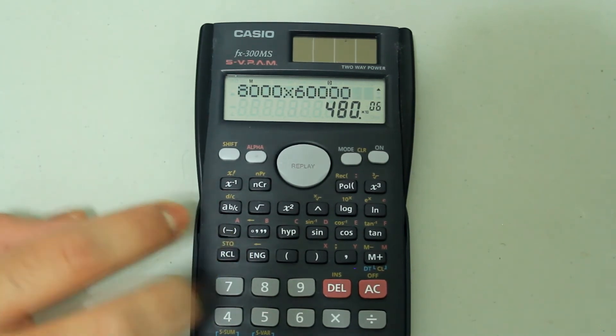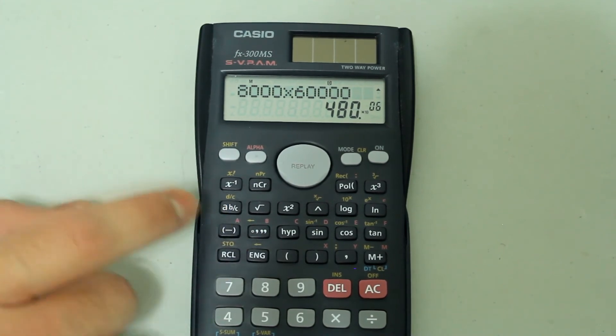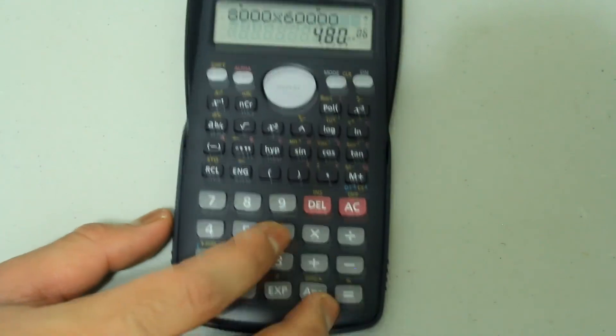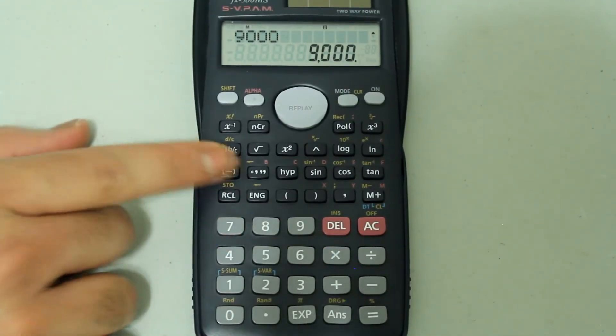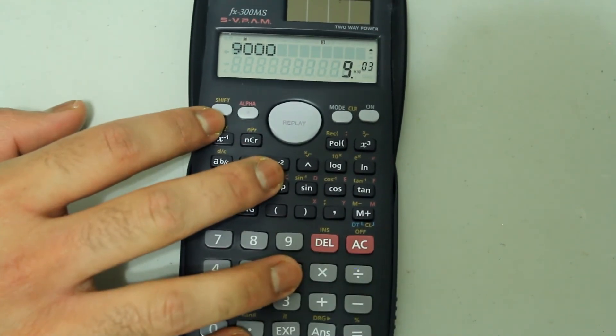And I haven't noticed a way to just select engineering notation mode. So if you just want the answer to be converted to engineering notation, once you get the answer, you just press the ENG button and you get the engineering notation.